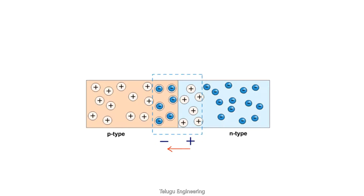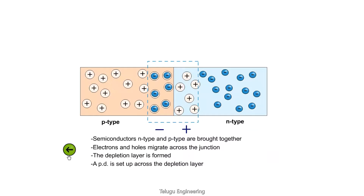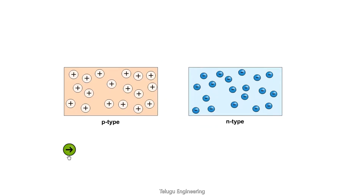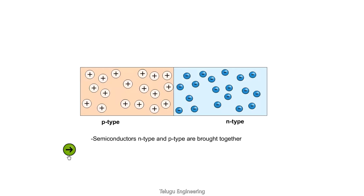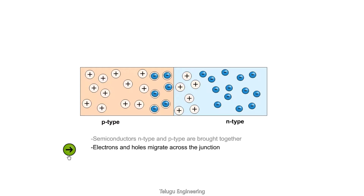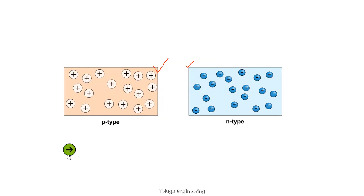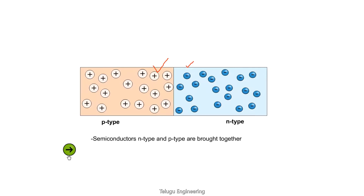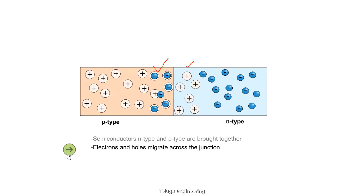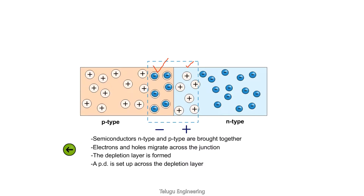Looking at a small animation: initially P-type and N-type are separate. When we sandwich them, electrons move due to concentration gradient, leaving relative positive and relative negative immobile ions, forming a depletion region with some potential difference. This is how a PN junction diode is formed. If you have any doubts please mention them in the comment section, I'll be glad to help.